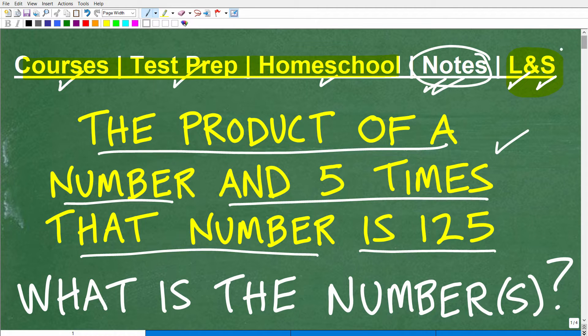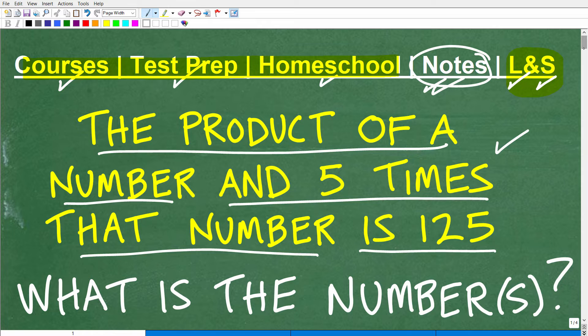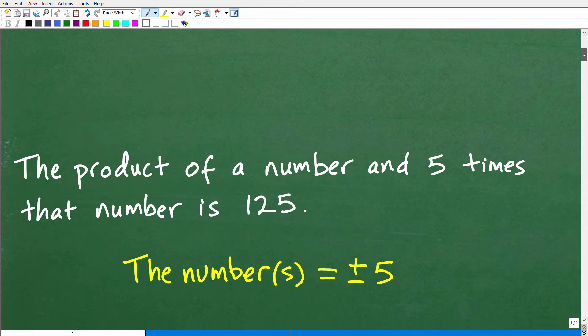Okay, so let's get to the solution to this problem. And then we're going to talk about how to solve this problem. All right, so the product of a number and five times that number is 125. What is the number or numbers?